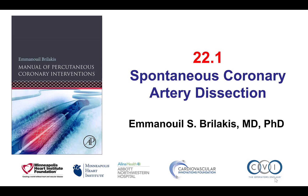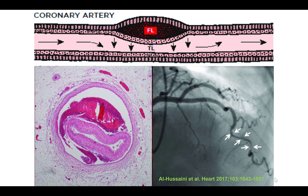This is Manos Brilakis and this is video 22.1 for the manual of percutaneous coronary interventions. This video discusses coronary angiography and percutaneous coronary intervention in patients who have spontaneous coronary artery dissection. The pathologic basis of the disease is characterized by creation of a communication between the true lumen and the subintimal space, which can lead to hematoma formation and compression of the true lumen, leading to either stenosis or obstruction of the coronary artery and resulting ischemia.